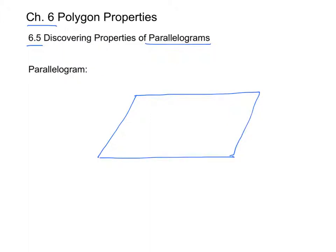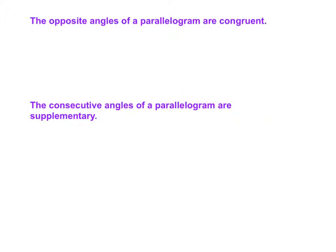A parallelogram is a quadrilateral whose opposite sides are parallel. We have two pairs of parallel sides here. Now we're going to start our list of conjectures.